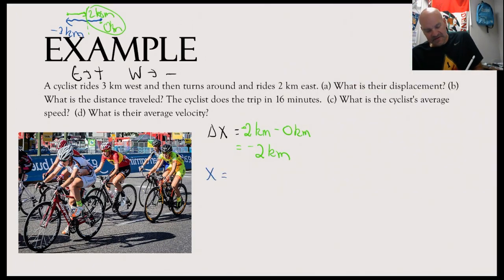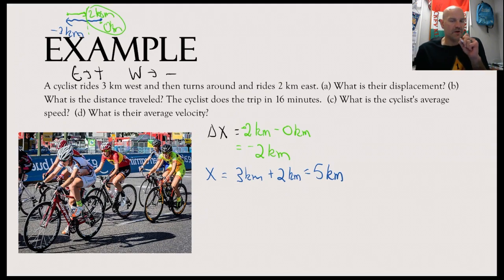Now, when I want to find the distance, I just get rid of all the signs, because distance is an example of a scalar quantity. So I know one part of the leg, I went three kilometers. The other part of the leg, I went two kilometers. So I had a final distance of five kilometers. So when you talk about distance, it doesn't matter that you went east to west, west to east. It just means you went three kilometers and then two kilometers.